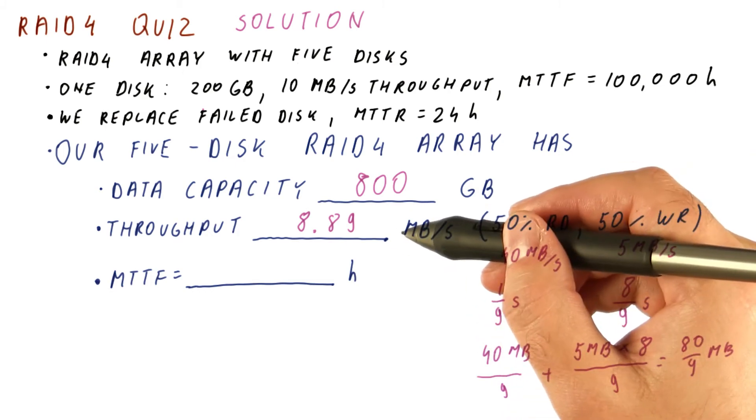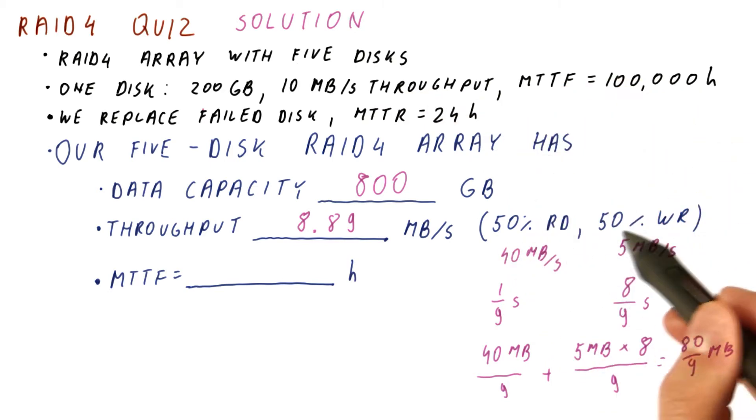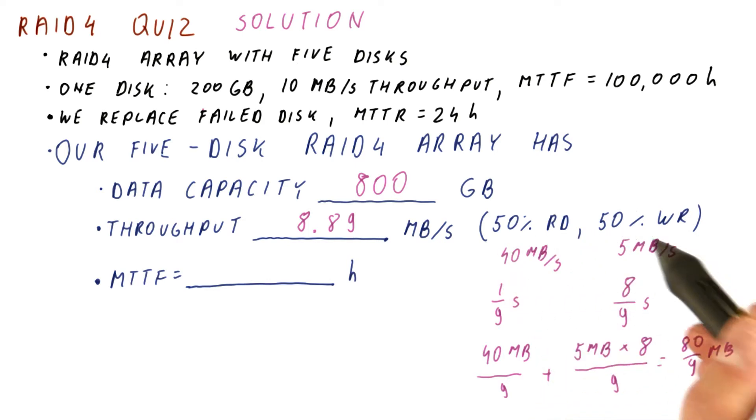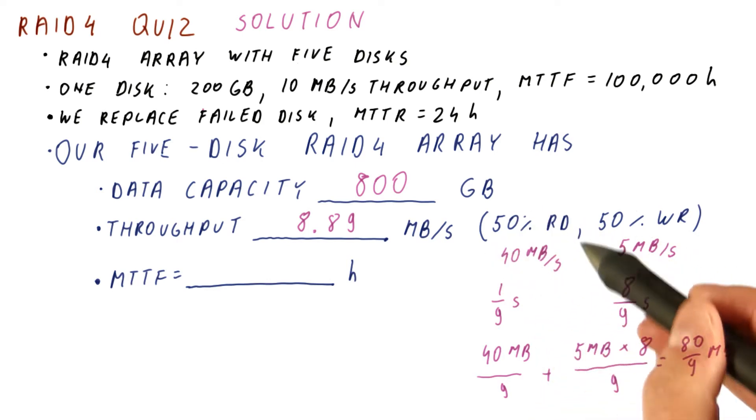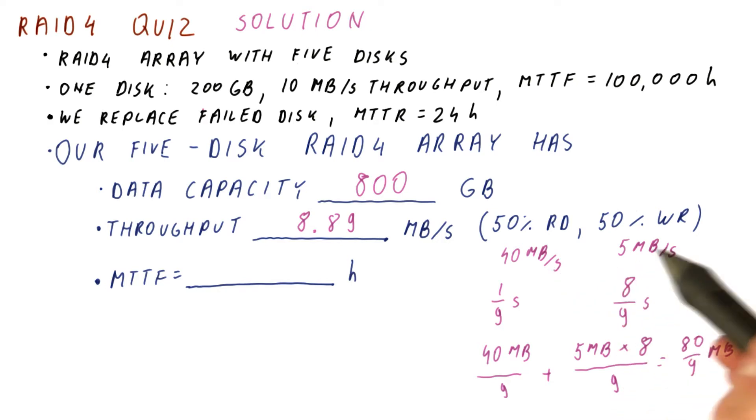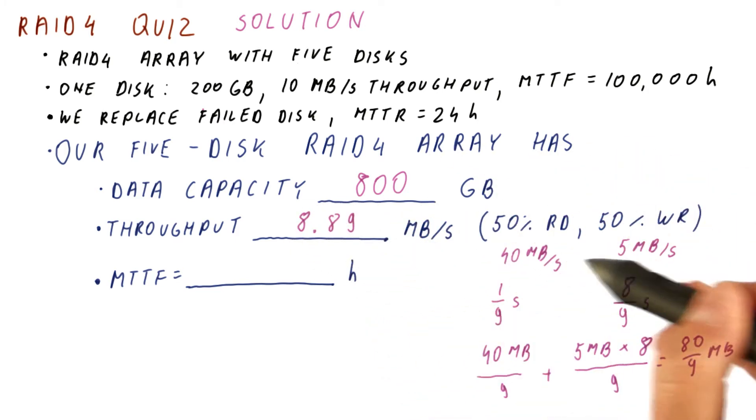Again, just like in our RAID 1 quiz, we cannot simply average the throughput for reads and the throughput for writes. We would get something more than 20 megabytes a second if we do that. But that would do a lot more reads than writes. Because it assumes that half a second we are reading, and we manage to read 20 megabytes. And then half a second we are writing, and manage to write 2.5 megabytes. As you can see, the read to write ratio is not 50-50 here. So that is again why we get this, and not just the simple average of these two.